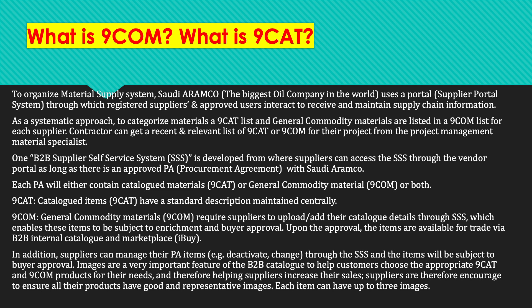What is 9COM and what is 9CAT? To organize the material supply system, Saudi Aramco uses a supplier portal through which registered suppliers and approved users interact to receive and maintain supply chain information. As a systematic approach, categorized materials are listed in a 9CAT list and general commodity materials are listed in a 9COM list. Each supplier or contractor can get a recent and relevant list of 9CAT and 9COM for their project from the project management material specialist.